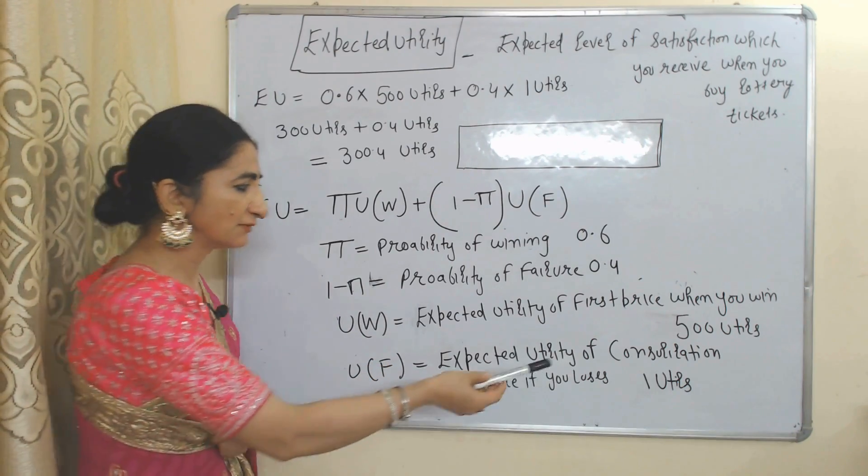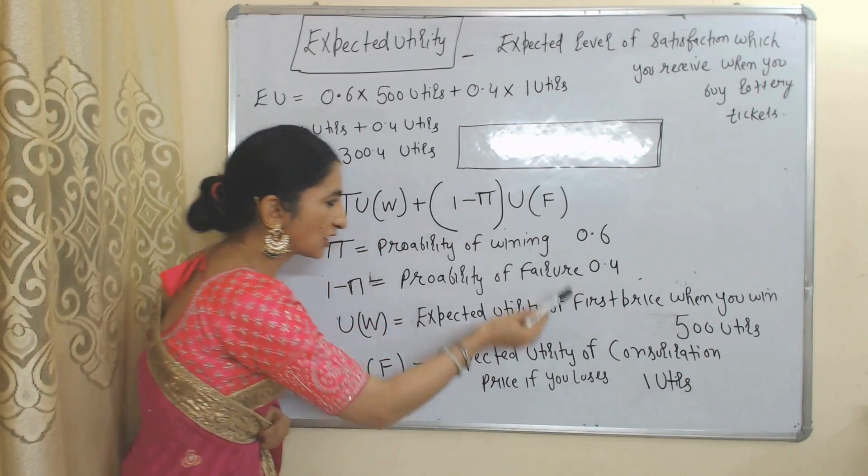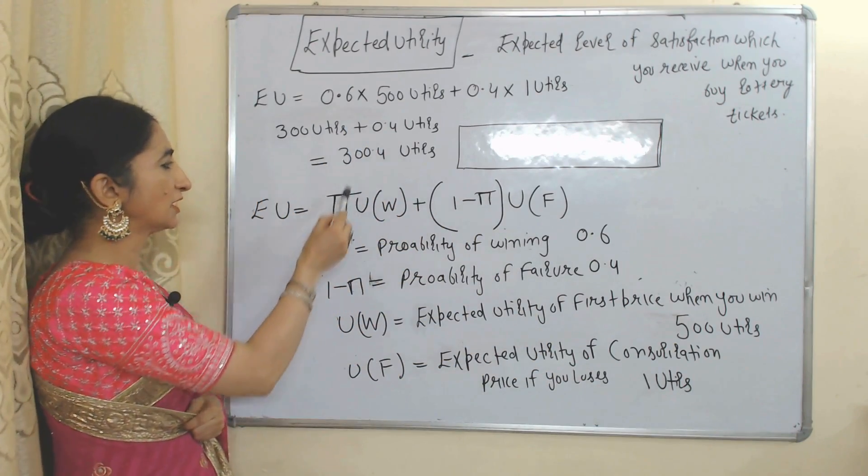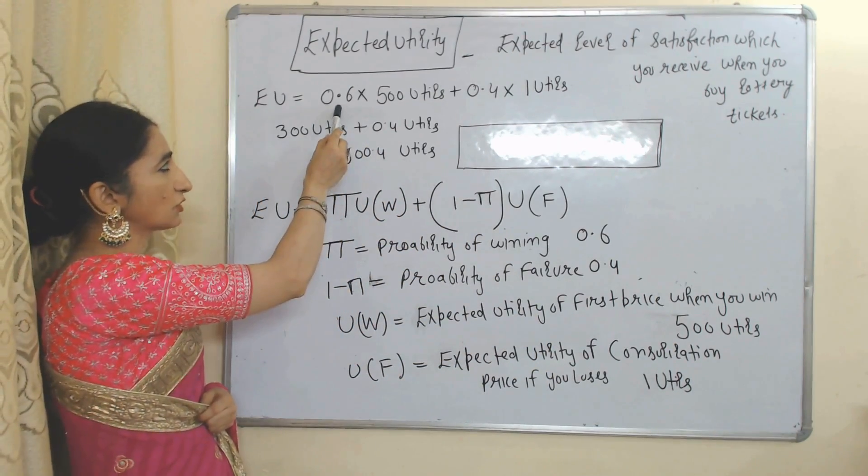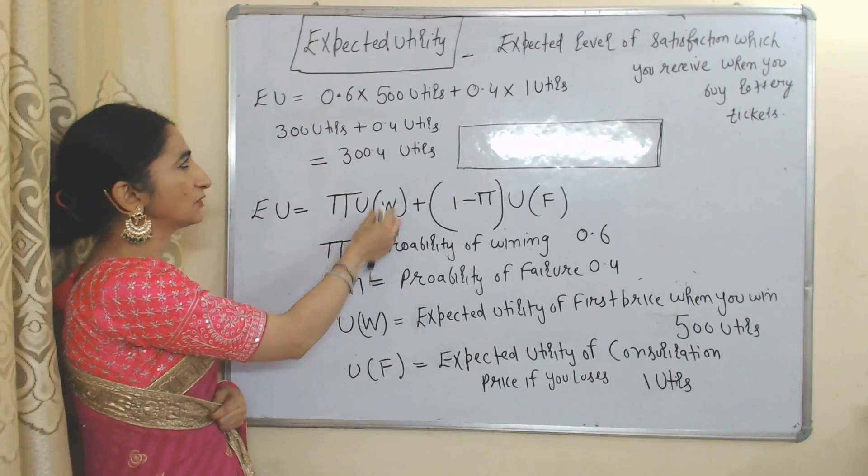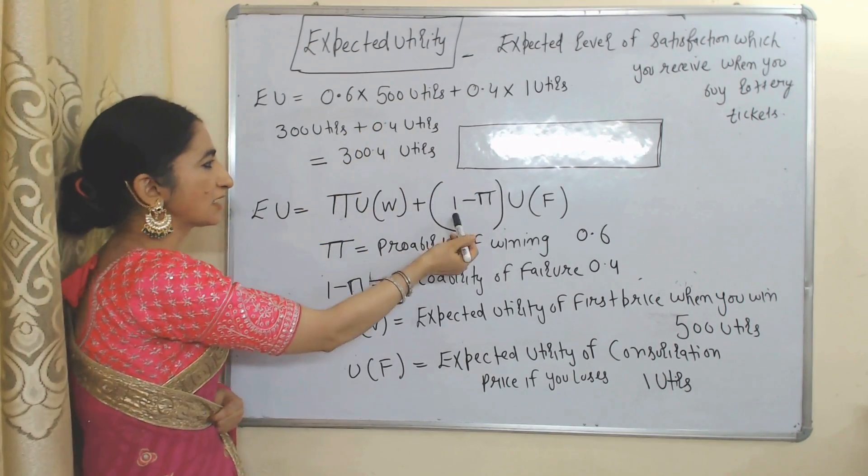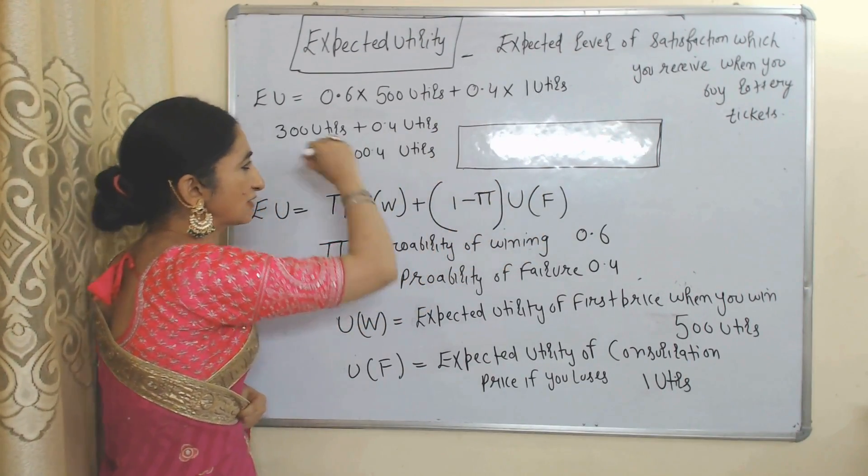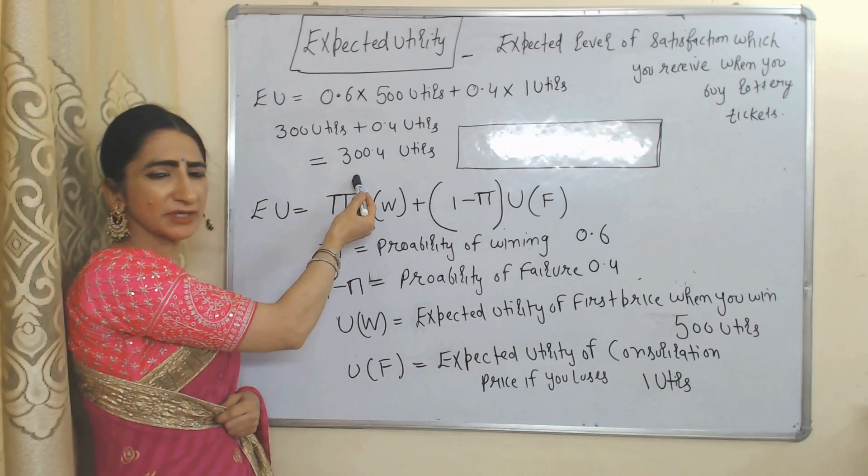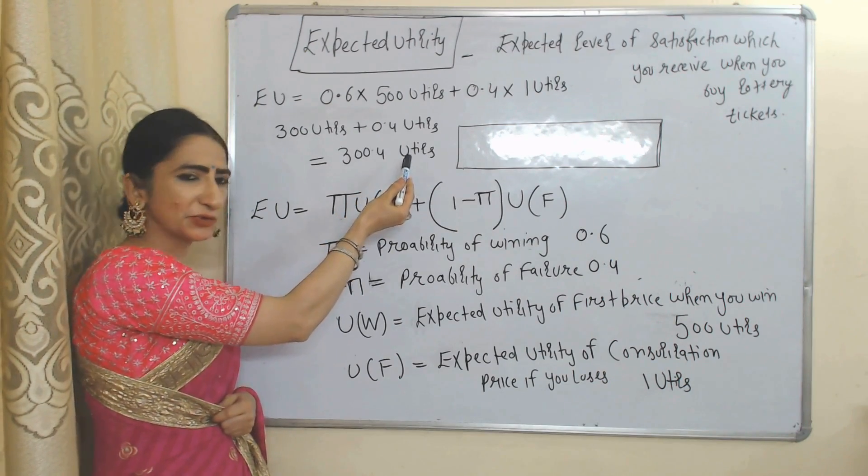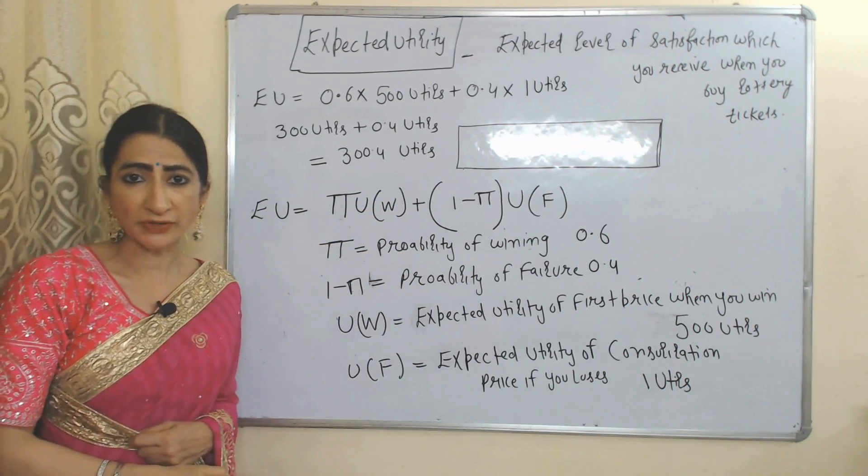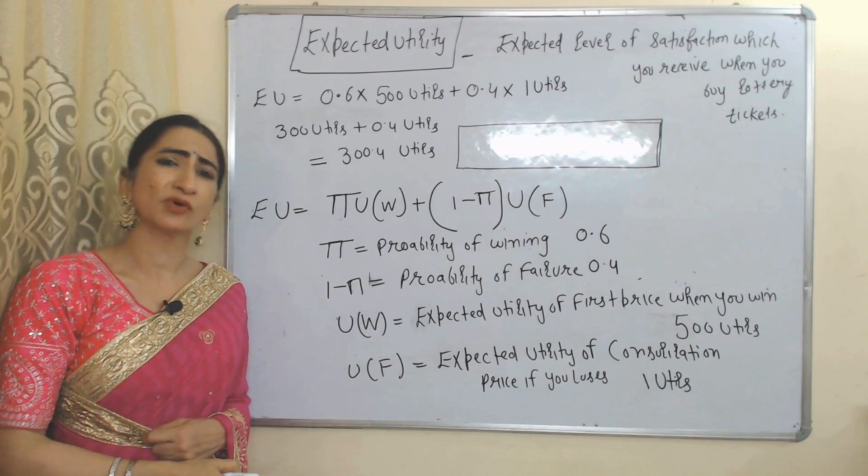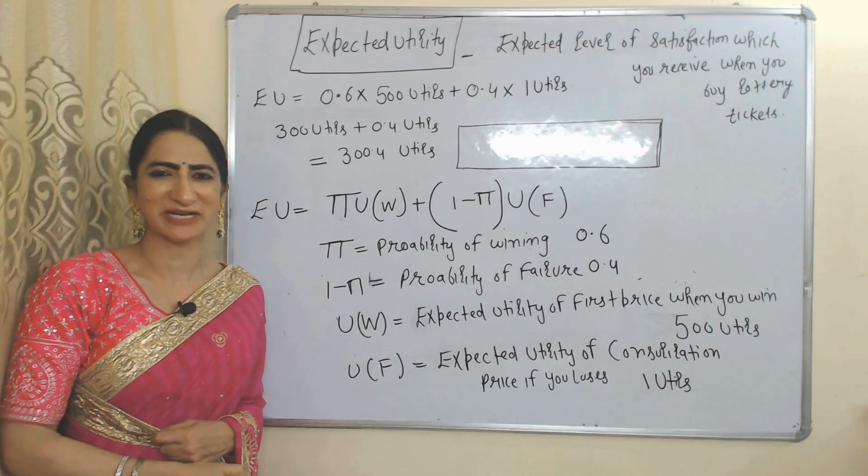We will put all these values: value of pi is equal to 0.6, U(W) equal to 500 utils, one minus pi equal to 0.4, U(F) equal to 1 util. When we solve this, it will become equal to 300.4 utils. So this is all about NM utility index. I think you got it. Thank you so much for watching this video. Bye, take care.